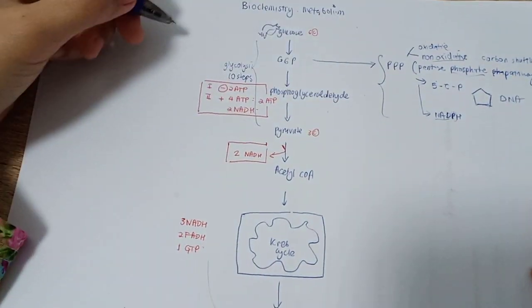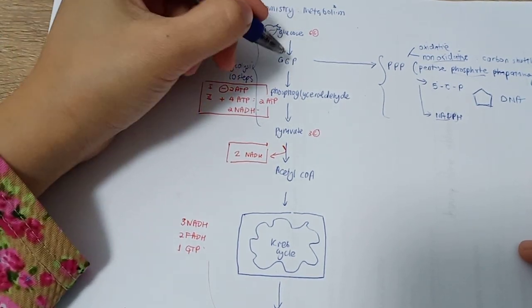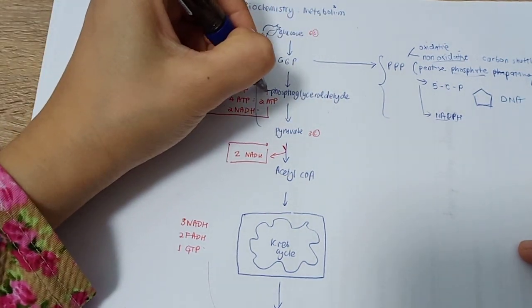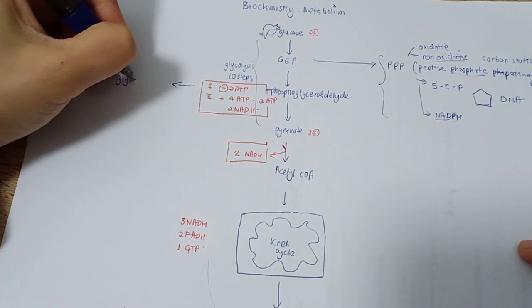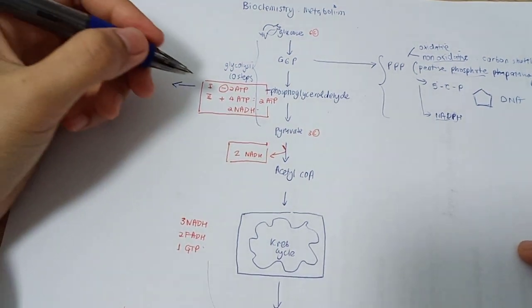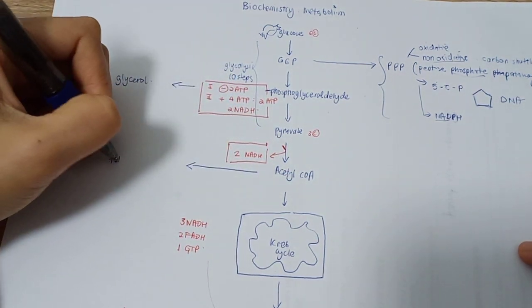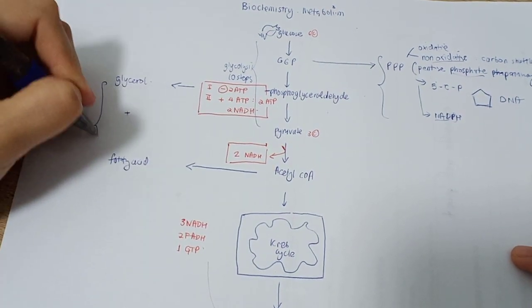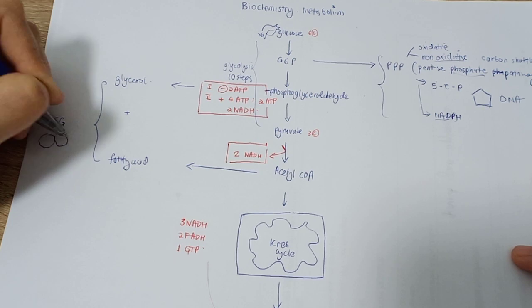That is the first shunt. The second one is that glucose-6-phosphate will also convert into phosphoglycerol aldehyde, and phosphoglycerol aldehyde will become glycerol. Together with acetyl-CoA, which will form into fatty acid, this together will form triglycerides.